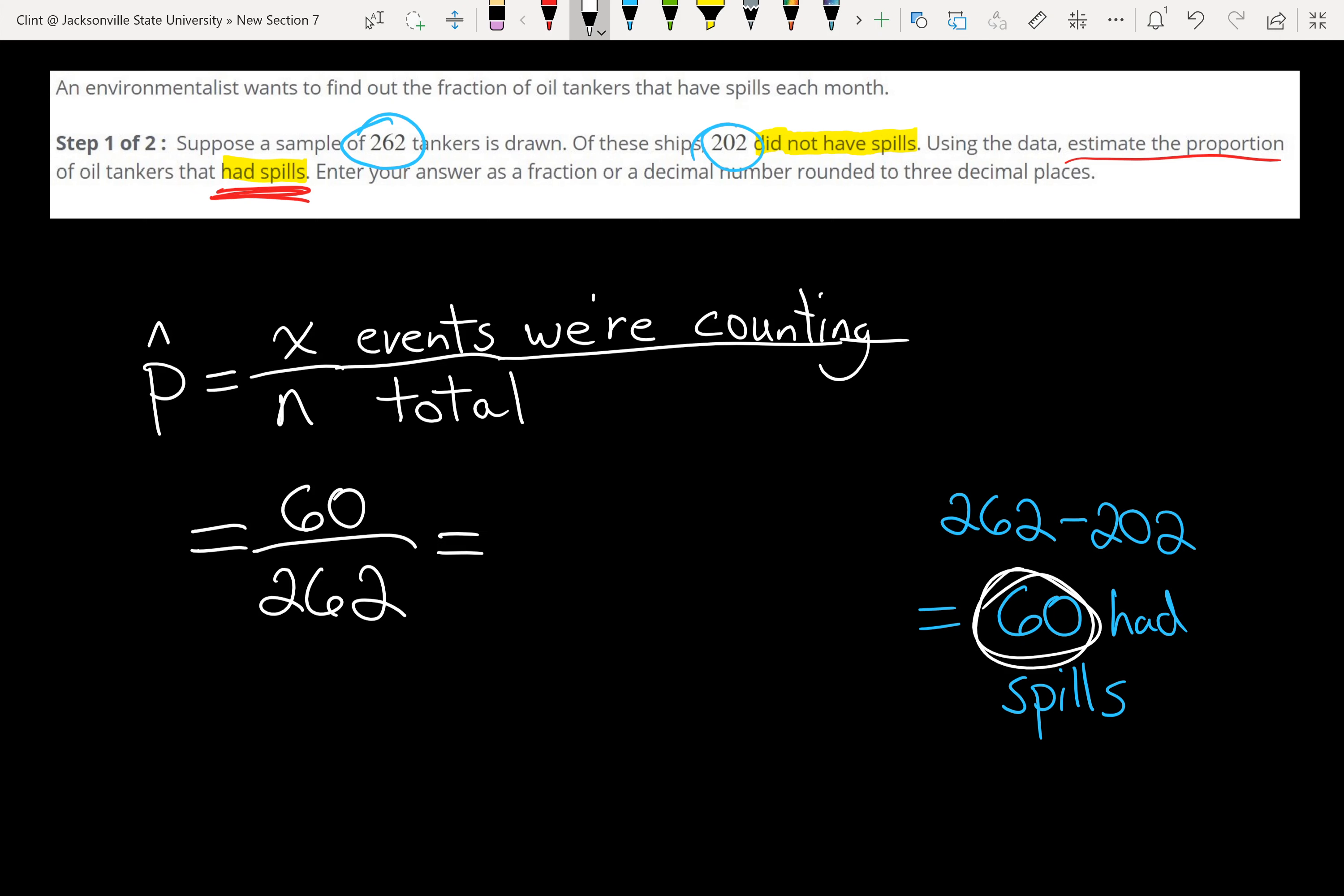So you can leave it as a fraction, if you leave it as a fraction, you're going to have to simplify that to 30 over 131, divide top and bottom by 2, or it's probably more convenient to write it as a decimal. So we do 60 divided by 262, it says round to three decimal places, so that'll give us 0.229, that is our p-hat. That is our answer on step one, that's our proportion, our sample proportion.